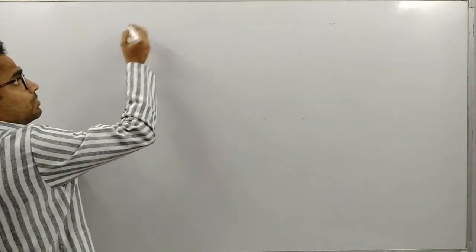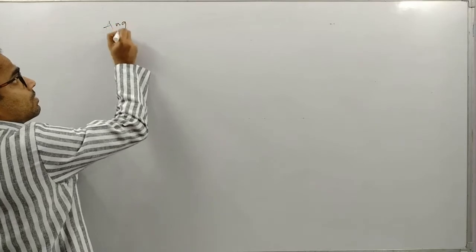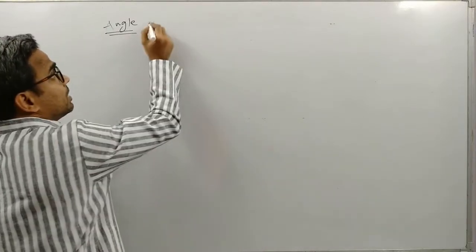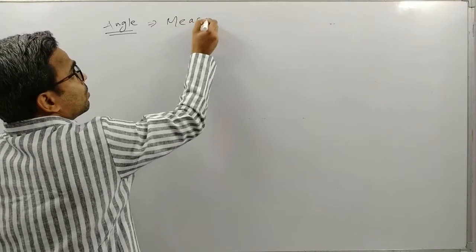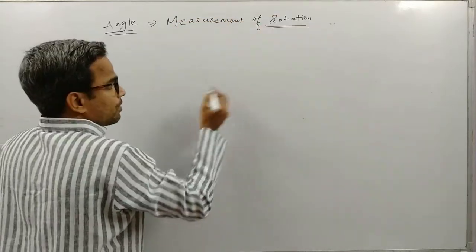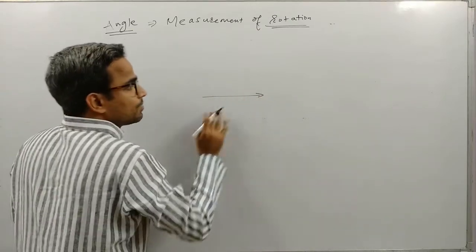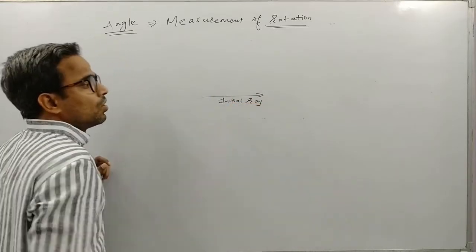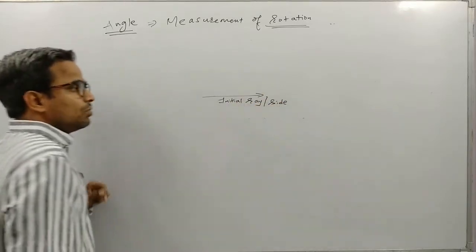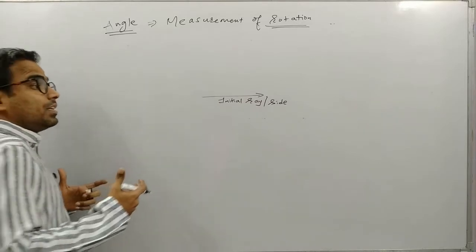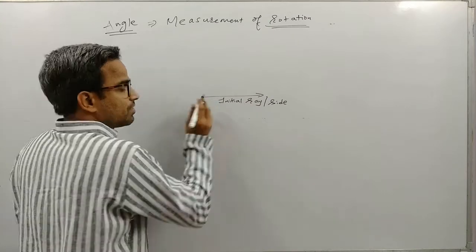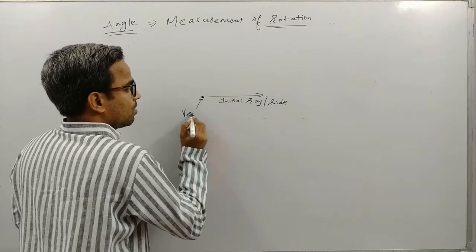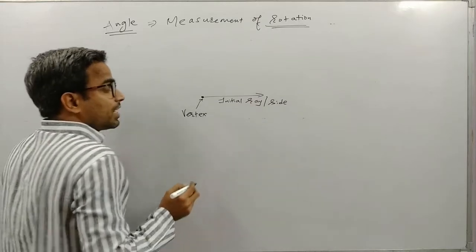The very first thing we will look at is: what is an angle? Basically, an angle is a measurement of rotation. We assume there is a reference line, also called the initial ray or initial side. There is a fixed point about which it rotates, and that fixed point is called the vertex.